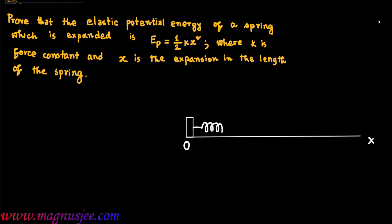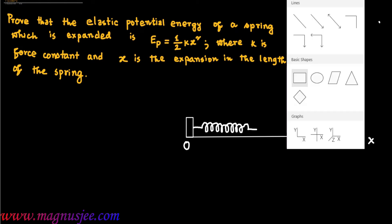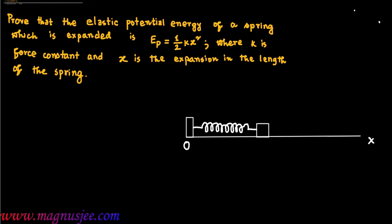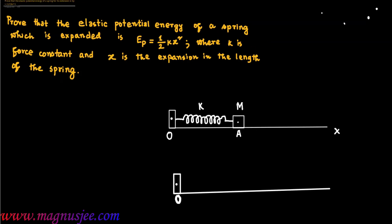We consider a rigid support at O to which a spring is connected. The other end of the spring is attached to a block of mass M, placed at point A. K is the force constant of the spring. The spring will be elongated by applying a deforming force on the block. The spring gets elongated towards right along x-axis.